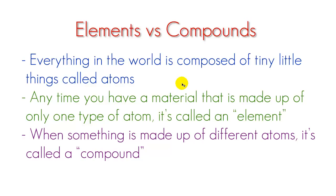Different types of balls exist — some might be blue, some might be orange, some might be big, some might be little. Whenever you have a material made up of only one type of these atoms, it's called an element. Whenever you have something made up of different types of atoms, it's called a compound.